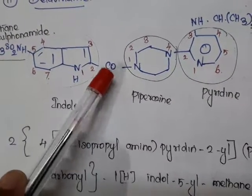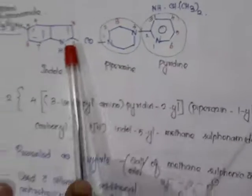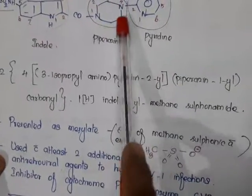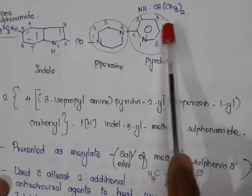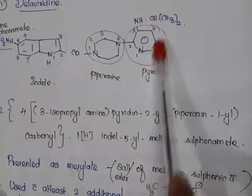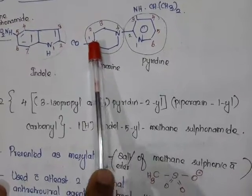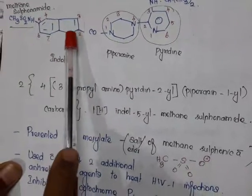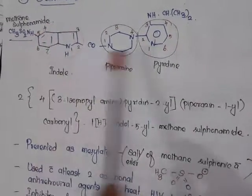With the parent, carbonyl is attached at the second carbon of indole, then piperazine is attached, and in the fourth portion of piperazine, pyridine is added. In the third portion of pyridine we have isopropylamino, so it is 3-isopropylaminopyridin-2-yl, piperazin-1-yl, carbonyl, and 1H-indole-5-yl methanesulfonamide.